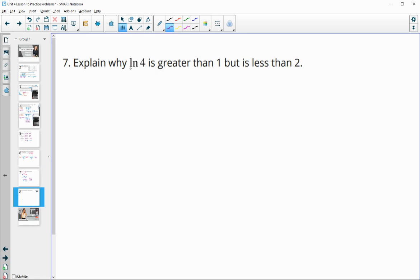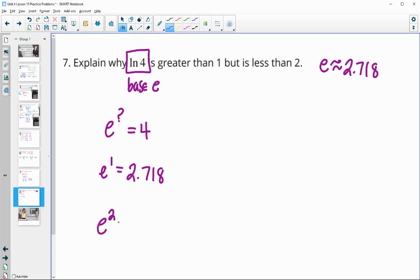Number seven, explain why the natural log of 4 is greater than 1 but less than 2. So remember when we have the natural log of 4 or the natural log of anything, the base is e. So this is saying e to what power will give us 4. And remember that we know that e is approximately 2.718. So when we do 2.718 to the first, e to the first is going to just equal e, so about 2.718. And then if I do e to the second, this is going to be 2.7 squared. So we know that 2 squared is 4.